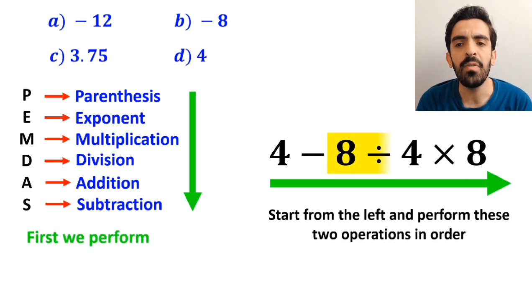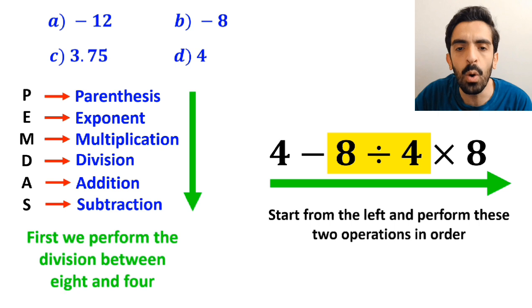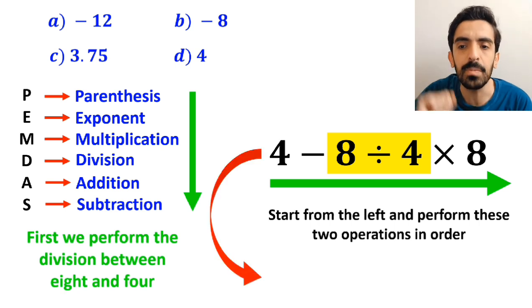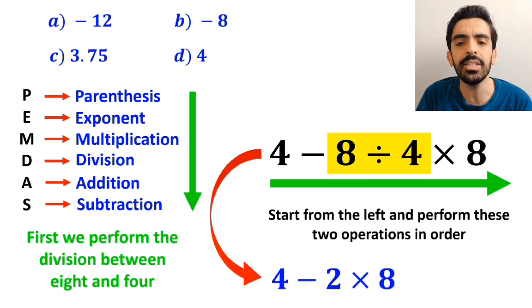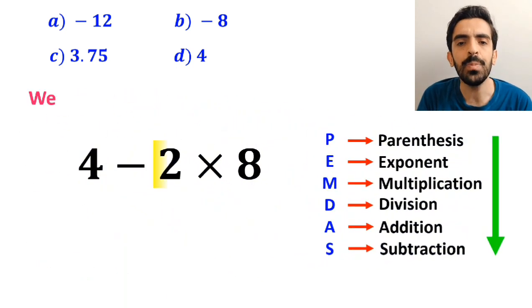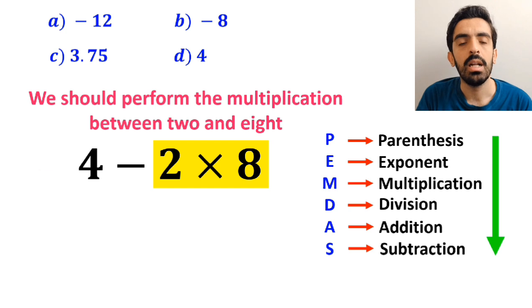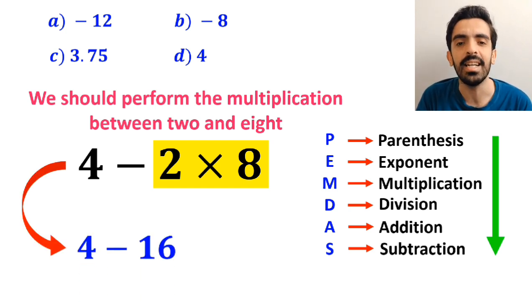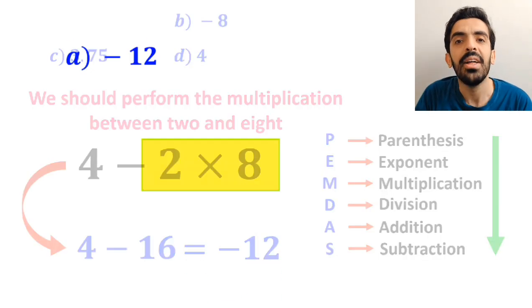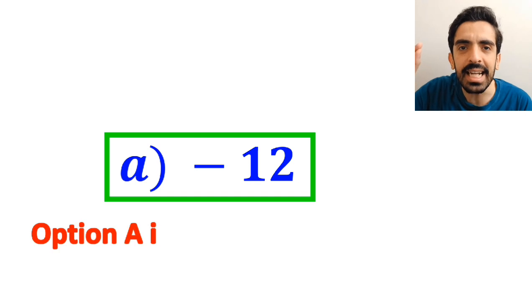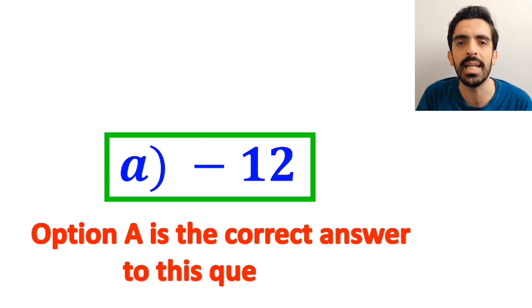So first we perform the division between 8 and 4. And instead of the original expression, we can write 4 minus 2 then times 8. In the next step, we should perform the multiplication between 2 and 8. So this expression simplifies to 4 minus 16. And finally, we get the answer negative 12. Therefore, option A is the correct answer to this question.